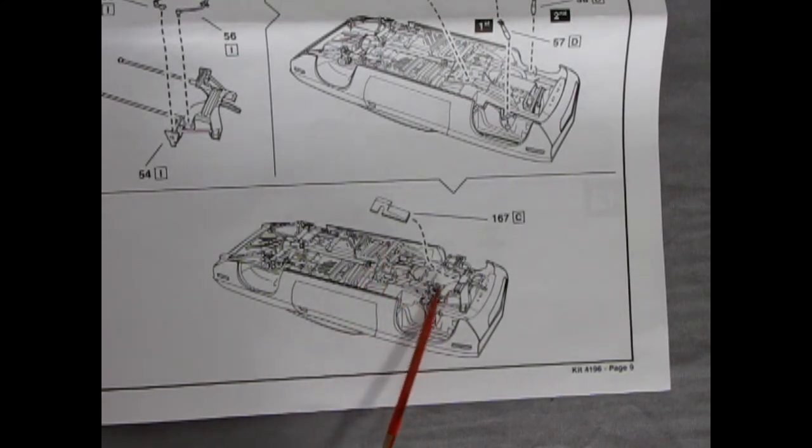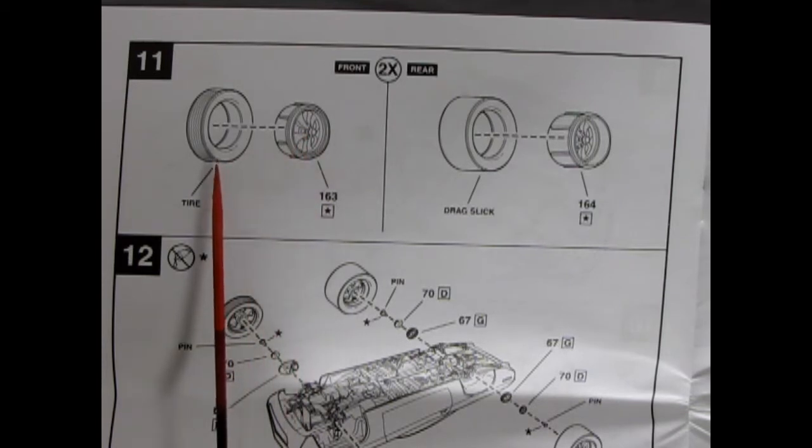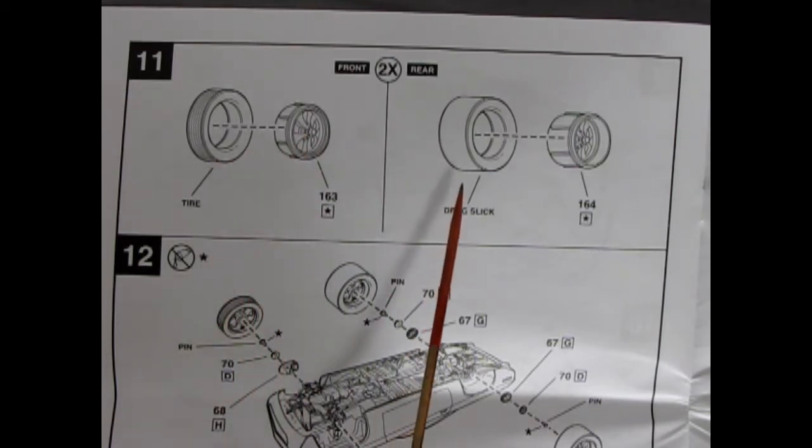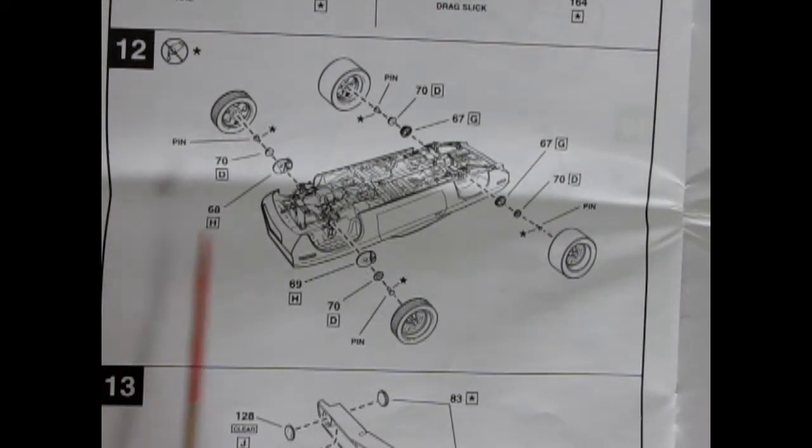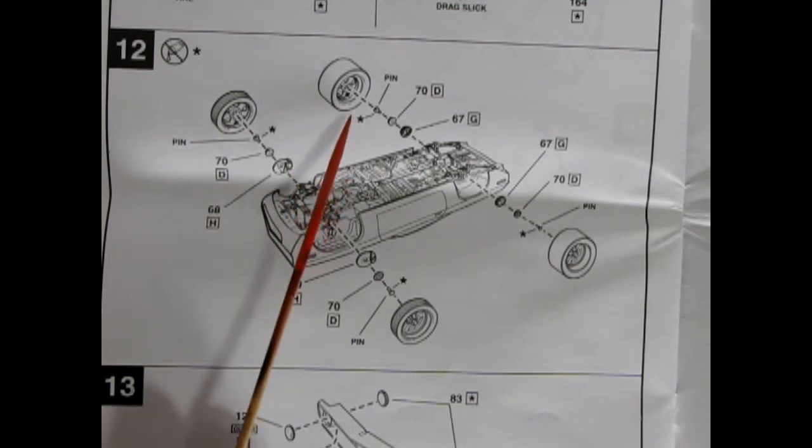Panel 11 shows those nice keystone five spoke mags going into the tires on the front, and the drag slicks and the deeper dish wheels going in on the back. Panel 12 shows our wheels going together, and you do get front disc brakes on this as well as a little retaining clip and a little thing to go in the wheel there. Same as on the back, except you get drums on the back just like the real car.